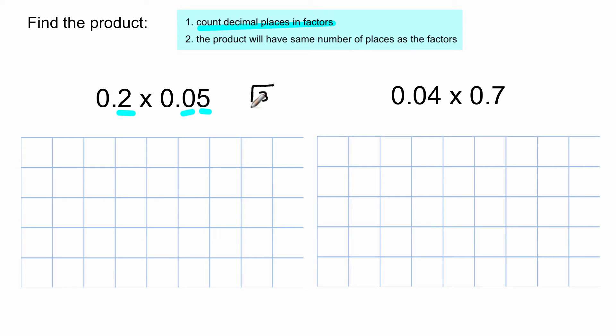Which means in the product, there's going to be a total of three. So you just count up the decimal places and that will tell you how many spaces over you need to move to put the decimal in the answer when we get the product.